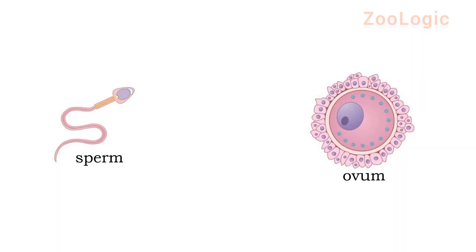As we all are familiar with the fact that one being continues its progeny — it is the phenomena of nature. In the image here, you can observe two cells; they are reproductive cells. The first one is smaller and is termed as sperm, which is a male gamete, while the other is a larger cell — a larger gamete — that is the ovum or egg, which is a female gamete.